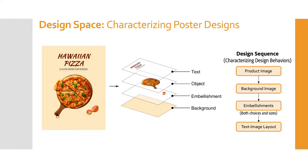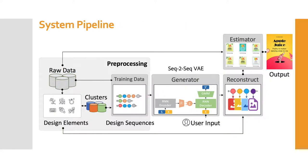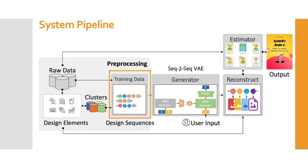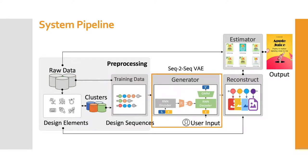Next, we factorize the design behavior of designers by constructing a design sequence of these elements. After doing so, we have a library of design elements decomposed from our training posters and a collection of design sequences representing the poster designs. The design sequences are then sent to a sequence-to-sequence VAE model for training and generating new design sequences. After that, the design sequences are reconstructed back into design elements to form a real poster.